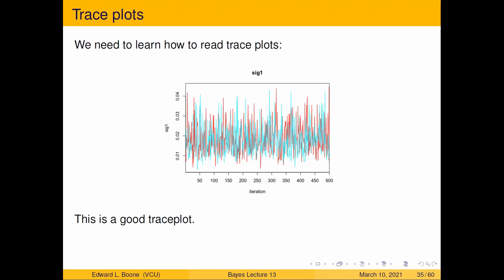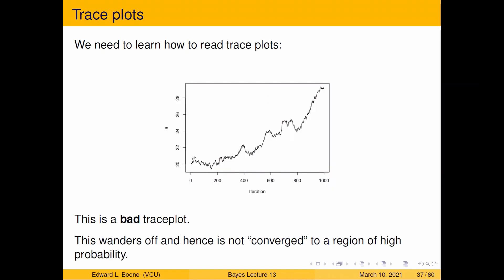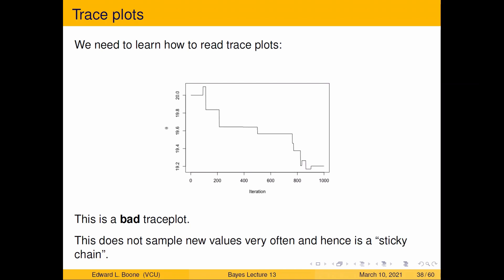This is a bad trace plot. Notice it just keeps wandering and wandering and wandering. So this means it's not converged to a region of high probability. Once it reaches a region of high probability, it should start looking like a fuzzy caterpillar. Here's another bad trace plot. So this one is a bunch of stair steps, and this is what we would call a sticky chain. This means that the sampler is having a rough time finding new values to plug in. There's lots of reasons for that, but just know that this is not good.